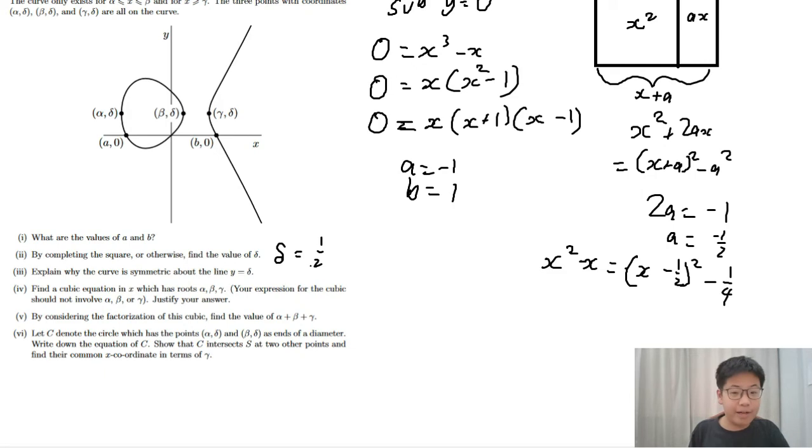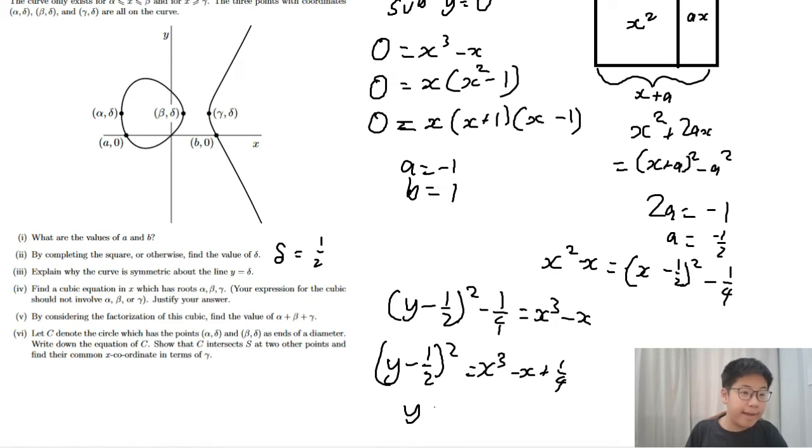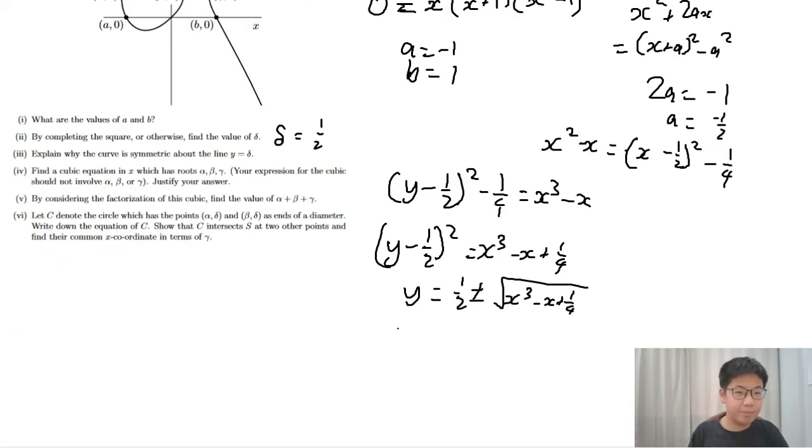Explain why the curve is symmetric. So we are now going to solve this. y minus half squared minus a quarter equals x cubed minus x. So y equals half plus or minus the square root of x cubed minus x plus a quarter. So if x, half plus big y on the curve, then so is x, half minus big y. That is our conclusion.